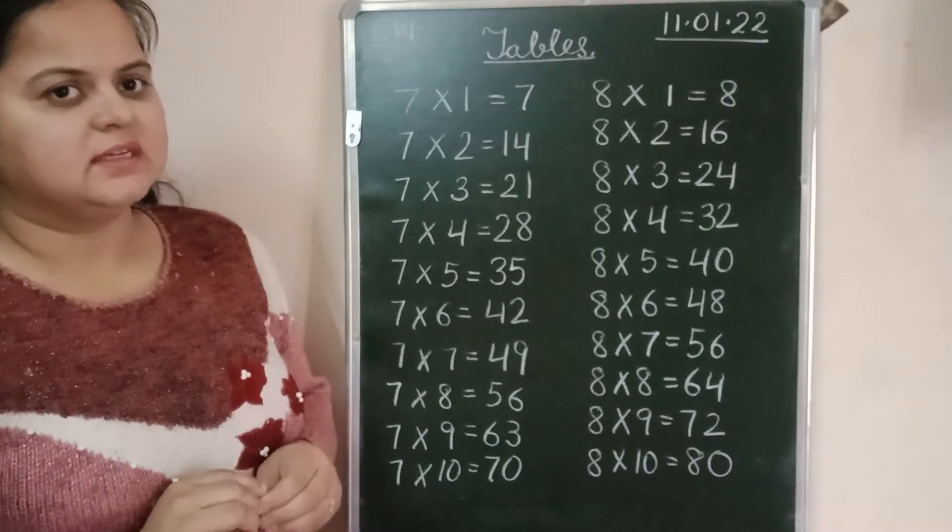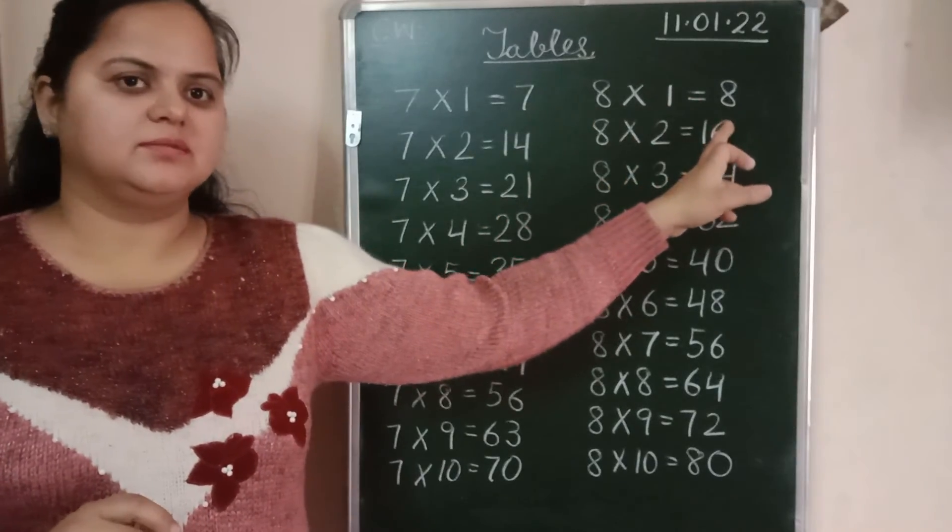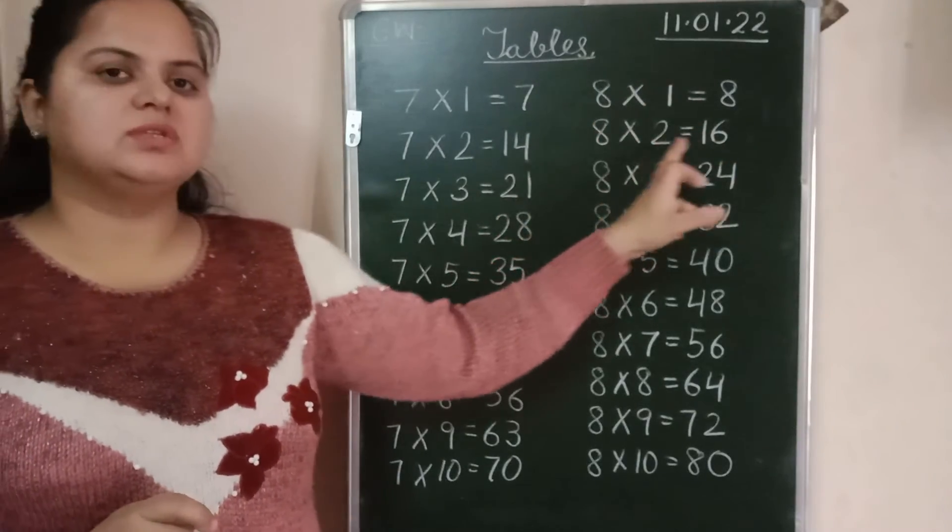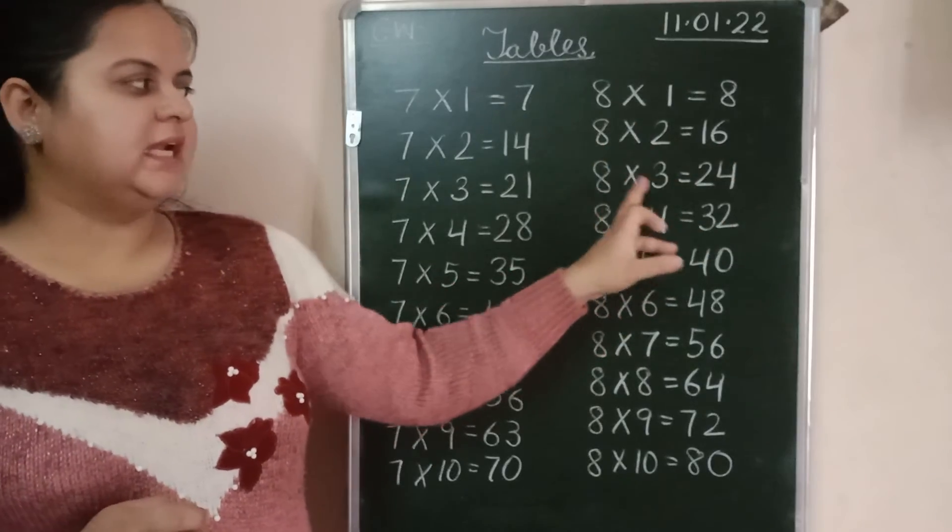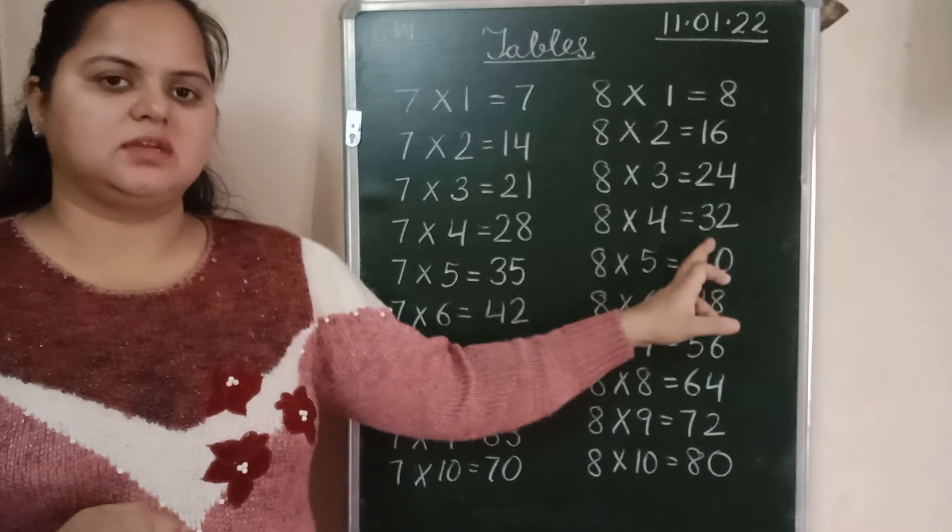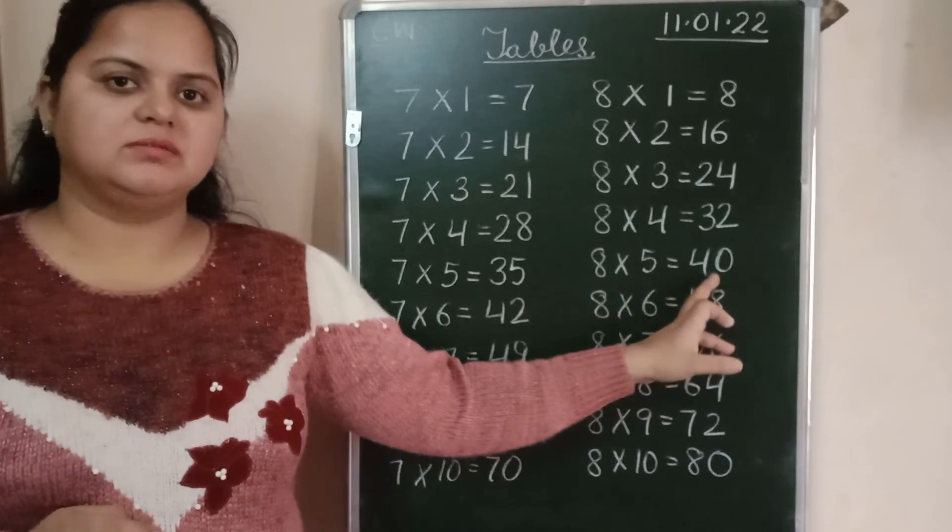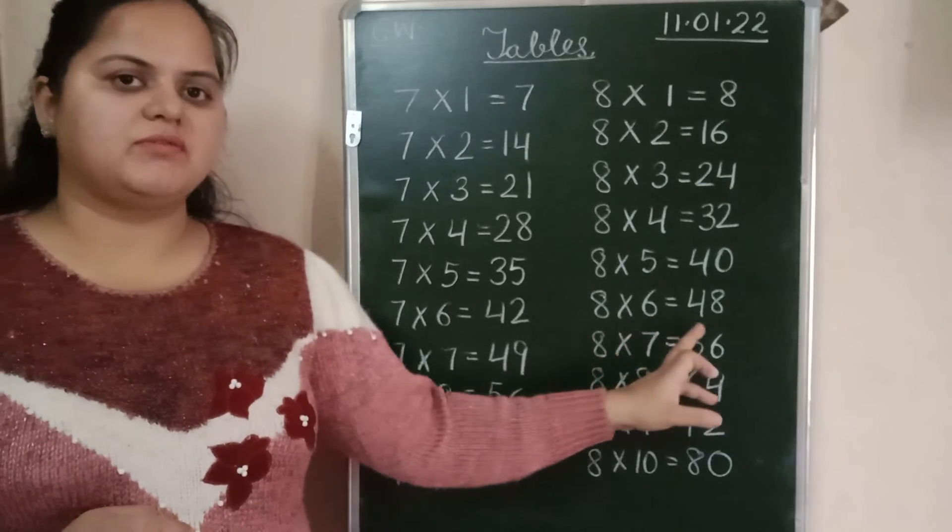Let's revise the table of 8 again. 8-1s are 8. 8-2s are 16. 8-3s are 24. 8-4s are 32. 8-5s are 40. 8-6s are 48.